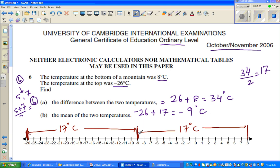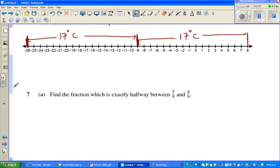This is a tricky question. You can go wrong here if you don't understand it graphically. Find the fraction which is exactly halfway between 5/9 and 8/9. So you got 5/9, 6/9, 7/9, and 8/9. So halfway comes here somewhere between 6/9 and 7/9.